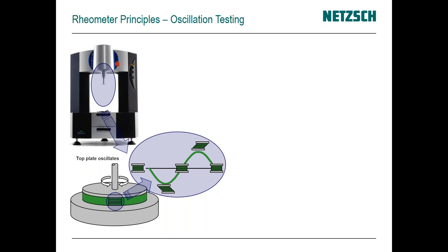When looking at deformation modes like oscillation, our goal is to oscillate the material and look at the forces generated. If we load a sample between the plates — the sample is the green area — as the upper plate oscillates back and forth, the sample goes from its loaded state to having its layers dragged in directions associated with the rotation of the plate.